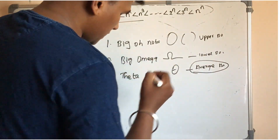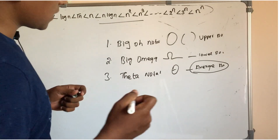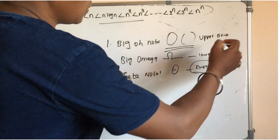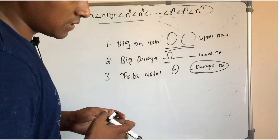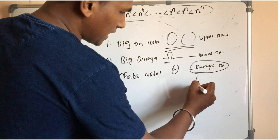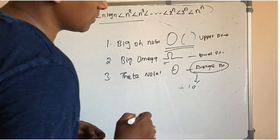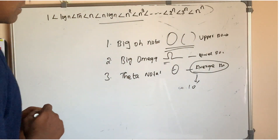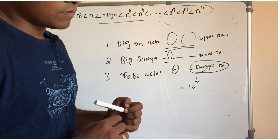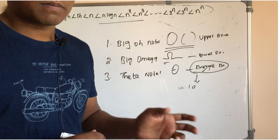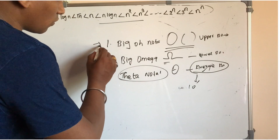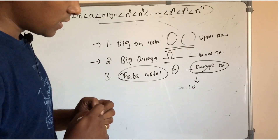The upper bound is the maximum time. You have to calculate the upper bound. You can represent the exact time — the same time for 100,000 and 1,000,000 inputs. You can represent big O and big Omega. You can represent the theta notation.